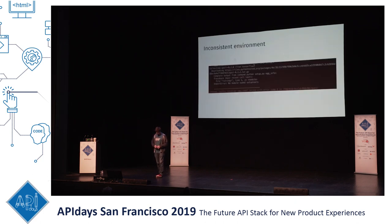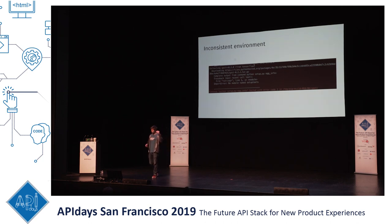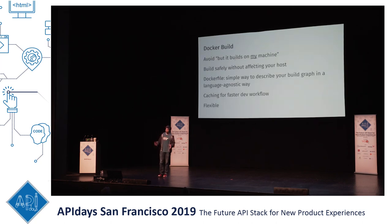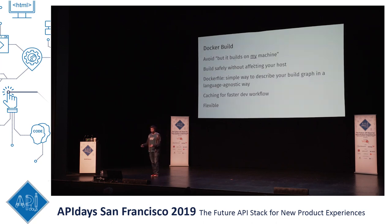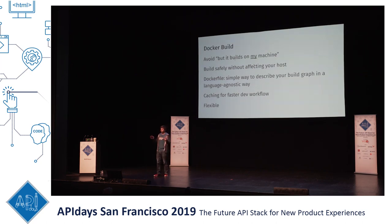The biggest problem that a Docker build solves is the inconsistent environment. When you git clone any project online and try to build it and it doesn't build — these are the kind of errors you can get. To solve that, you want a consistent environment, which is what Docker containers bring you. It avoids the "builds on my machine" problem. It also builds safely without affecting your host too much. A Dockerfile — can I ask who has written Dockerfiles so far? About half the audience.